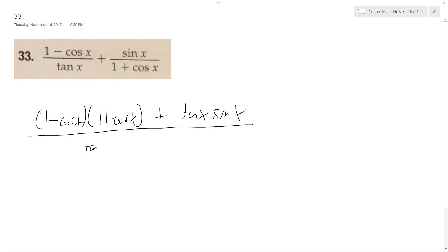All right, tangent x, 1 plus cosine x, and I get 1 minus cosine squared x plus tangent x times sine x.